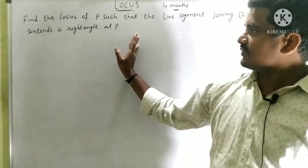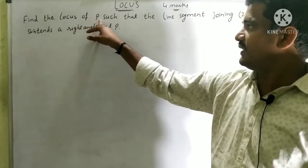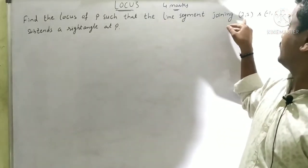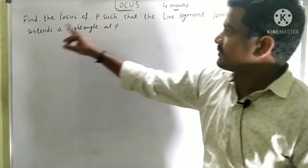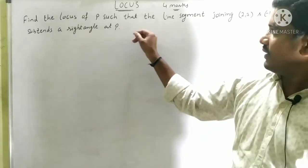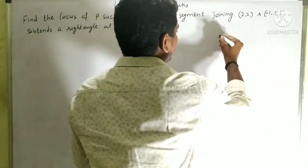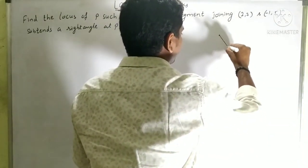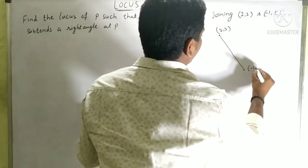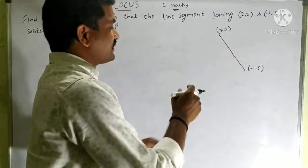This is the first question: Find the locus of P such that the line segment joining (2, 3) and (-1, 5) subtends a right angle at P. Here we join the line segment between the two given points.